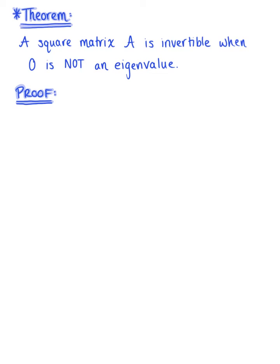Here we have a theorem that tells us that a square matrix A is invertible when 0 is not an eigenvalue. Having this word 'when' implies that this is an if-and-only-if statement.